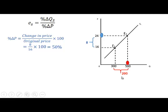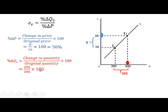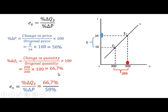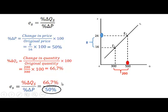The quantity changes by 200. The percentage change in quantity supplied is the change in quantity divided by the original quantity, times 100. That gives us 66.7%. Combining these two to calculate price elasticity of supply: percentage change in quantity supplied is 66.7% and the percentage change in price is 50%, giving us 1.3.